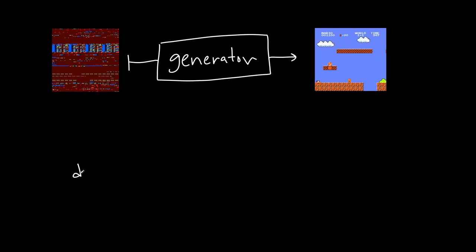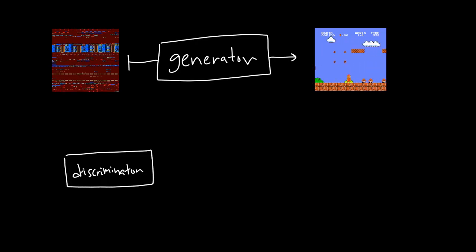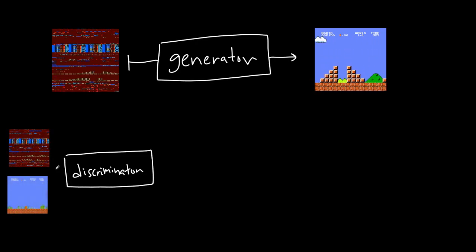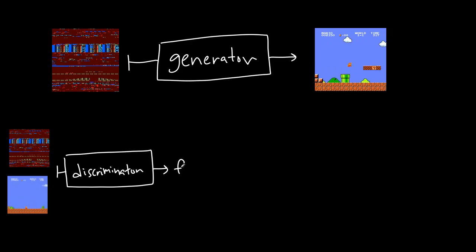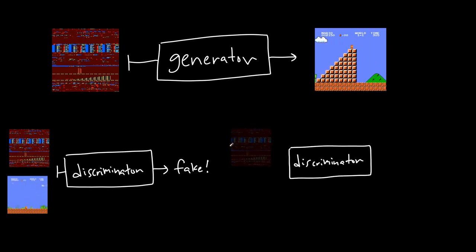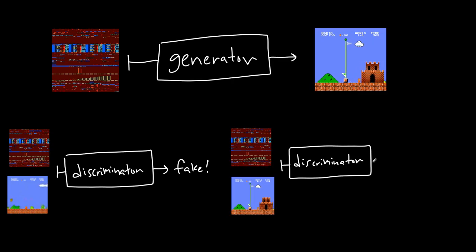So what's the discriminator? As the generator is being trained, we're also training another neural network — the discriminator. We're feeding the discriminator the Nintendo's RAM and the output from the generator, and training the discriminator to identify these as fake. While at the same time, we're also feeding the discriminator the Nintendo's RAM and the actual output from the Nintendo, and training the discriminator to identify these as real.